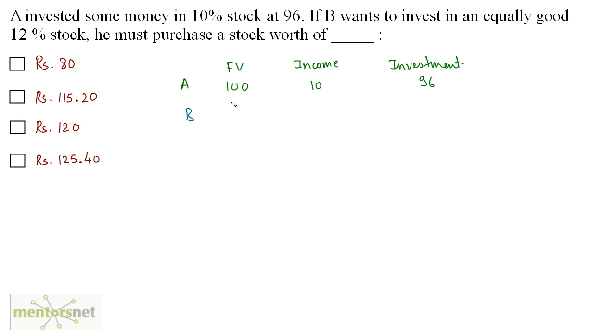Now in case of B, the face value, if we consider it as 100 to match that of A, the income is 12. Now if this 12% stock must be equally good as the 10% stock, what should be the investment?